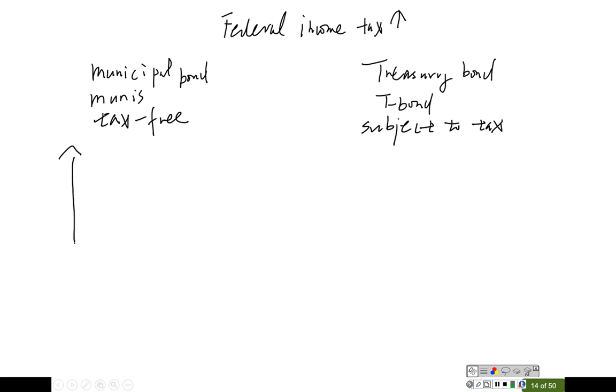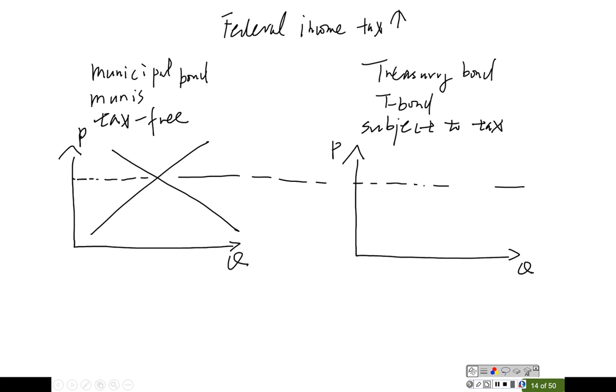So let's first draw the supply and demand curve for each bond here. Here again we assume these two bonds initially have the same price level, which implies these two bonds have the same level of the interest rate initially. So that's the municipal bond, we use M, that's the treasury bond, we use T.